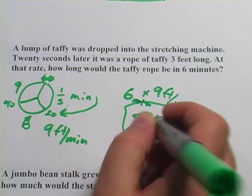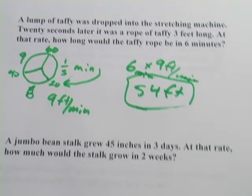Six times nine would be 54 feet. That is a long rope of taffy. That was kind of a tricky one.